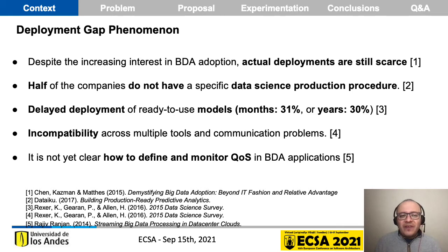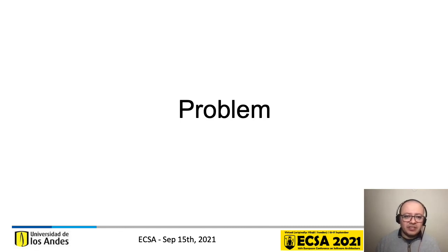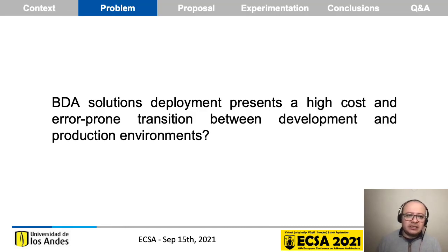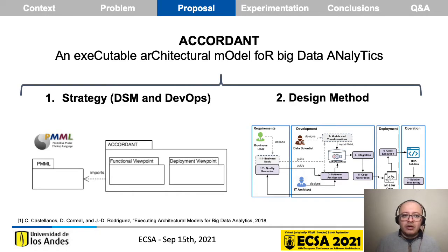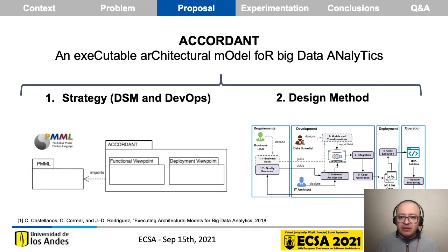Additionally, it is not yet clear how to define and monitor quality of service in BDA applications. The problem we want to address is that BDA solution deployments present a high cost and error-prone transition between the data lab development environment and the production environment. As a proposal, we present Accordant: an executable architectural model for Big Data Analytics, composed of a strategy using domain-specific modeling and DevOps, and a design method — a set of steps to define the architectural drivers, the functional and deployment views, and then generate code to have a running application in a productive environment.